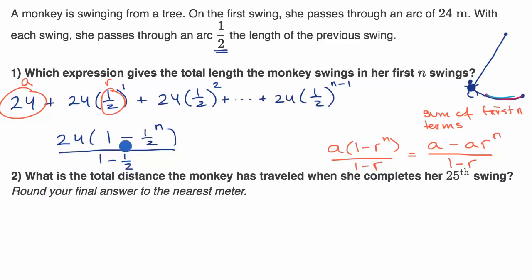So we could leave it like that, or we could simplify it a little bit if we like. One minus 1/2 is equal to 1/2. 24 divided by 1/2 is equal to 48. So if you wanted to, you could simplify it to 48 times (1 - (1/2)^n). So either of these would be legitimate.